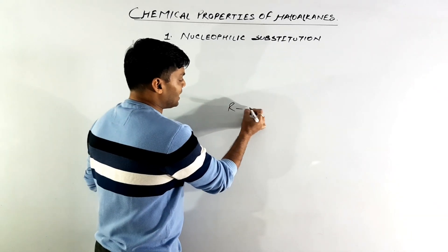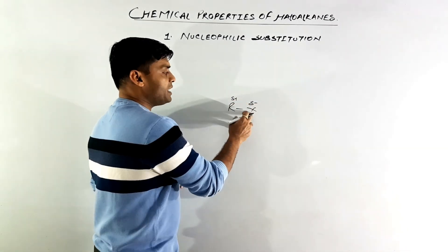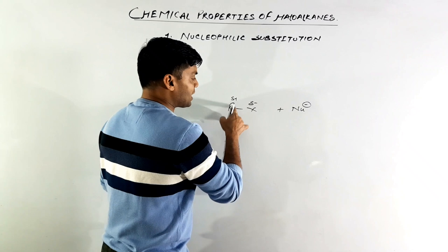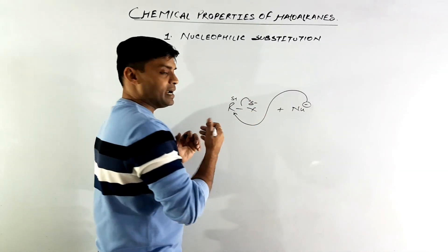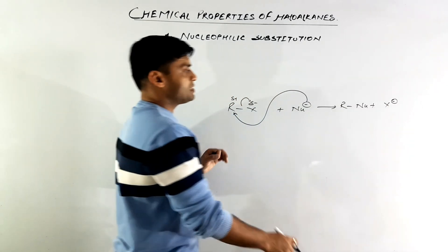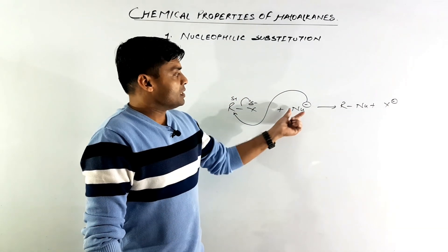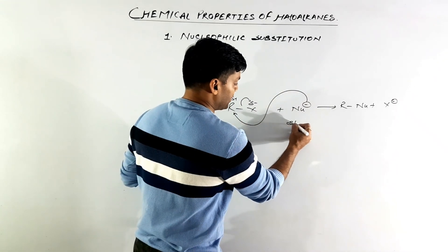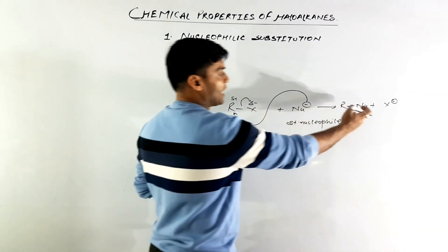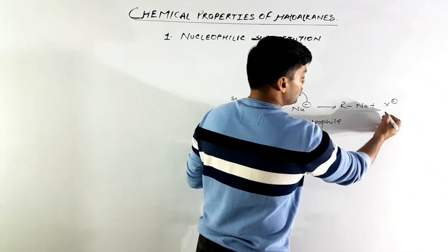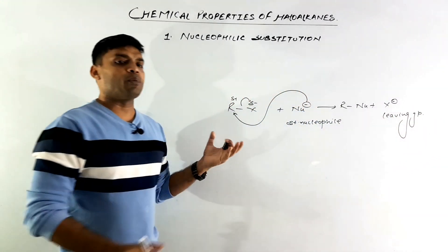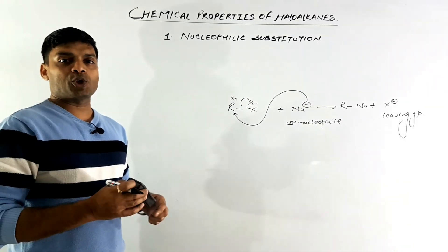In alkyl halides, the halide ions, which are partially negative, generally act as very weak nucleophiles, forming R-Nu plus X⁻. This is a general representation of nucleophilic substitution reactions. The incoming species is the stronger nucleophile, and the departing halide ion is called the leaving group.